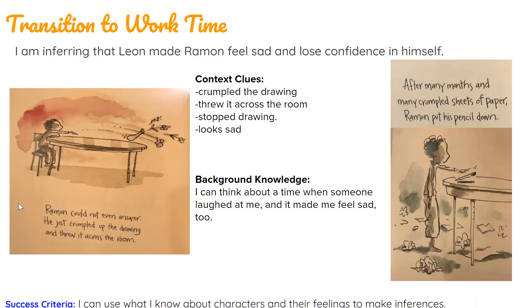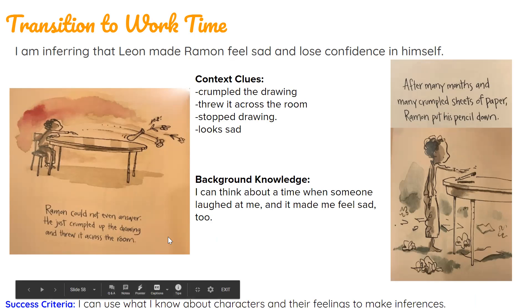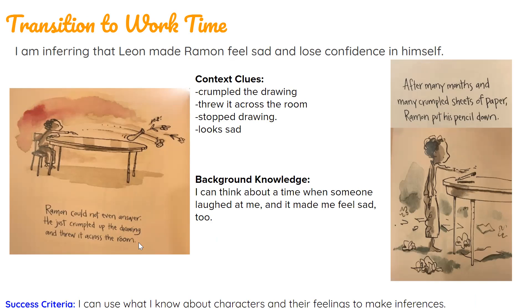Now let's look at the part of the book where we learn this. Ramon could not even answer. He just crumpled up the drawing and threw it across the room. I don't think a happy person or an excited person would throw their paper across the room. And I also look at Ramon's body — I look at his face and I see that his eyebrows are crunched. This illustration gives me more information. It shows me that he is upset.